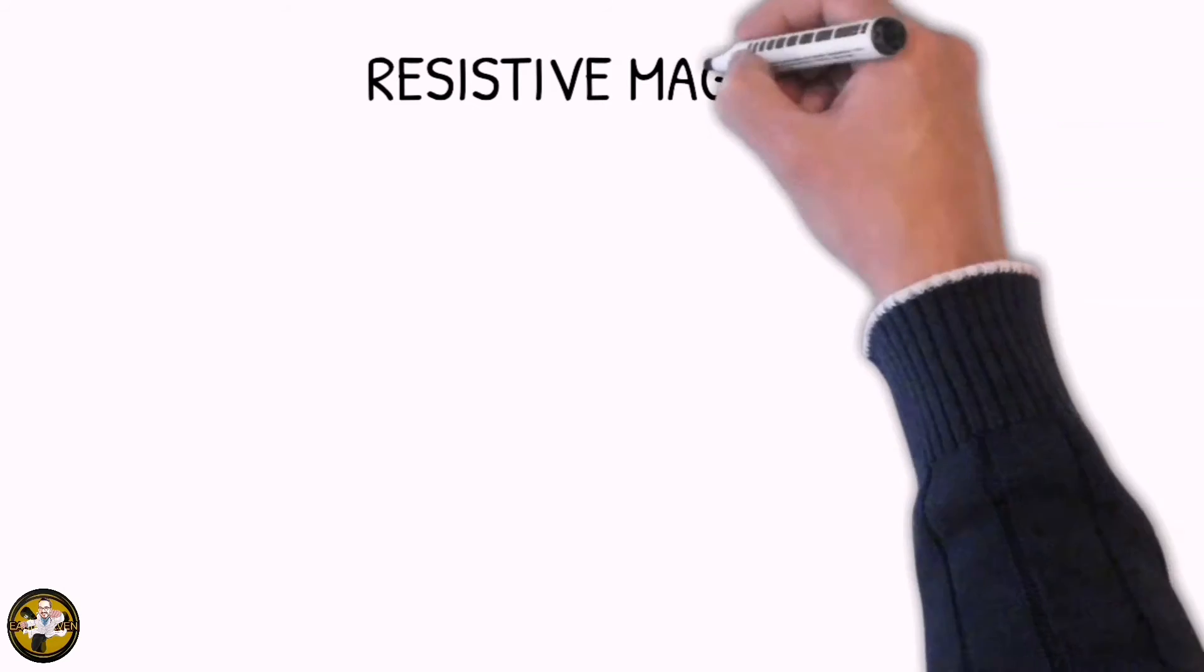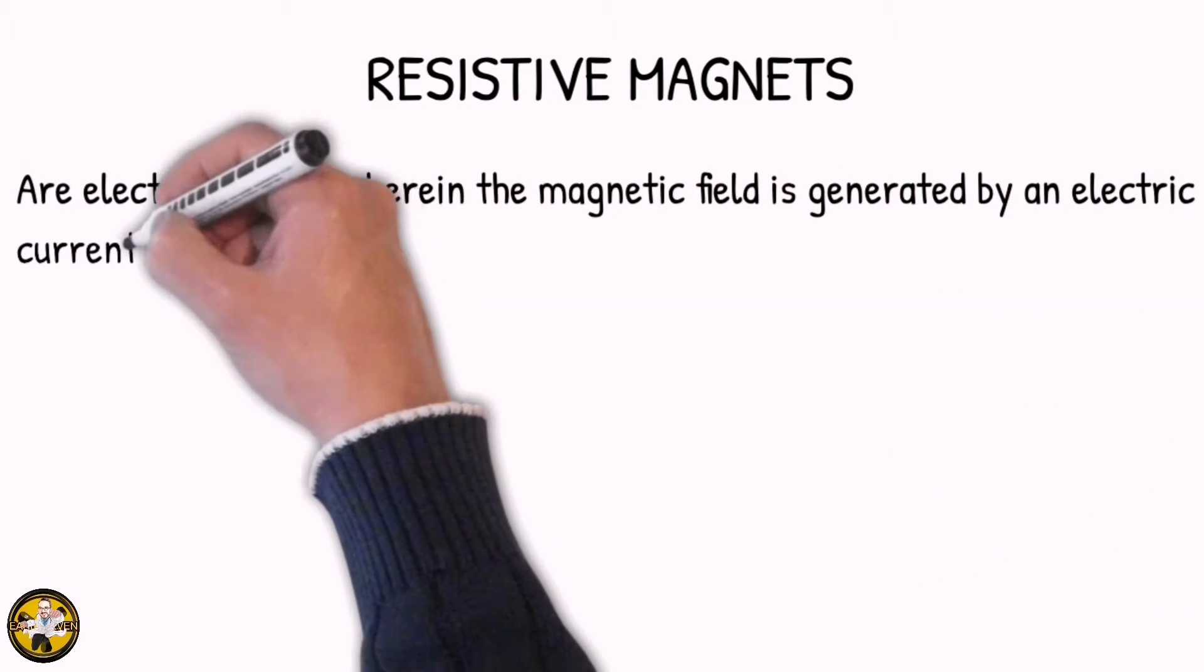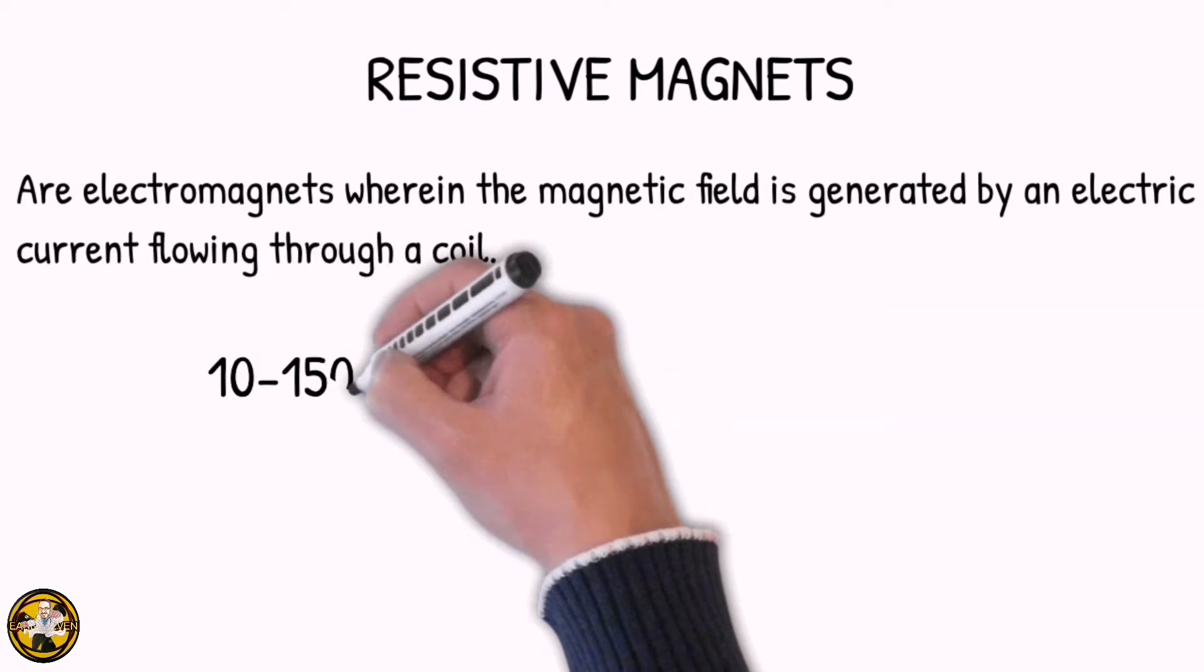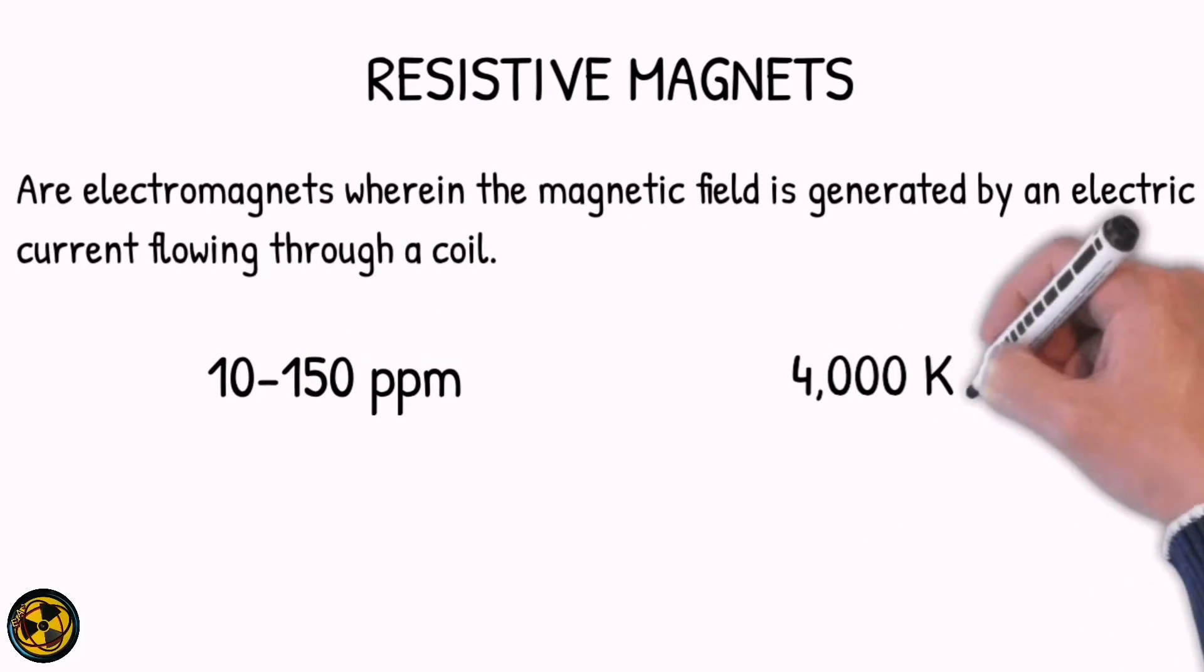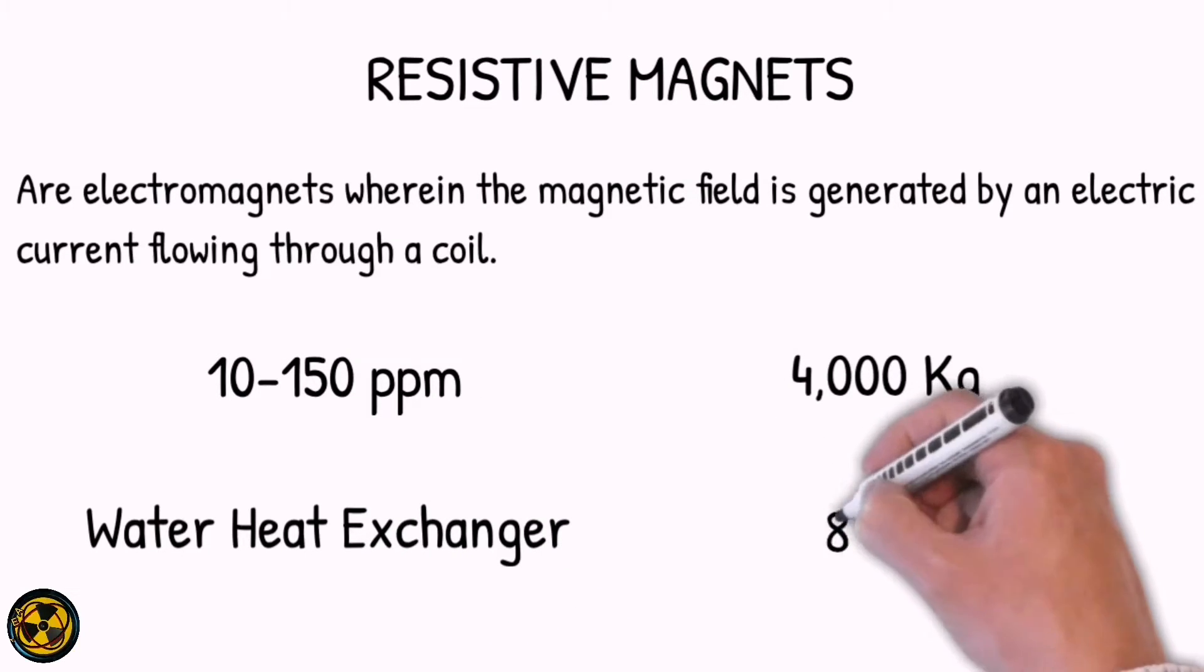The second type of magnet is the resistive magnet. These are electromagnets wherein the magnetic field is generated by an electric current flowing through a coil. Magnetic field homogeneity is 10 to 150 ppm, weight is approximately 4,000 kilograms, cooling system used is water heat exchanger, and the power consumption is 80 kilowatts.